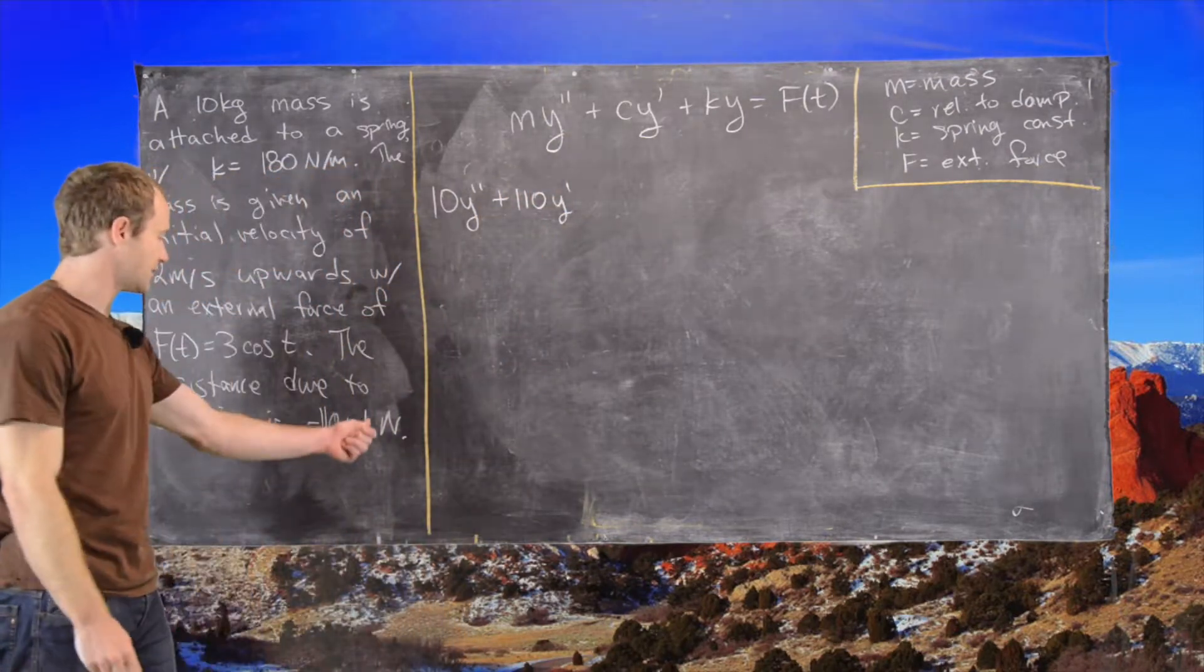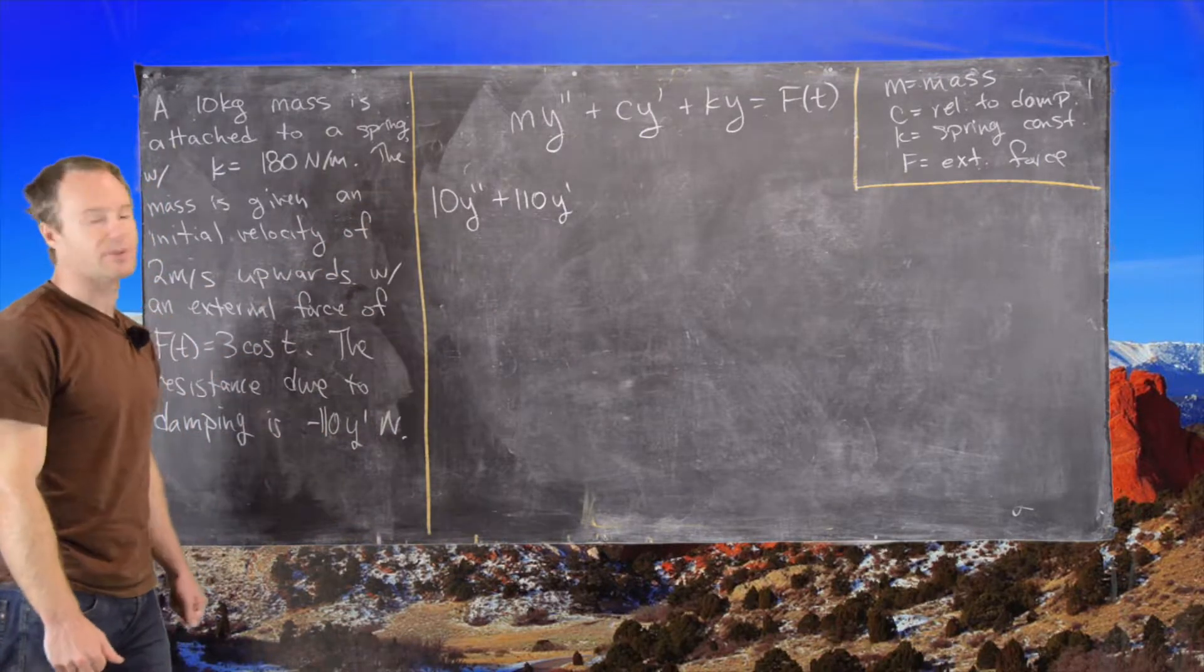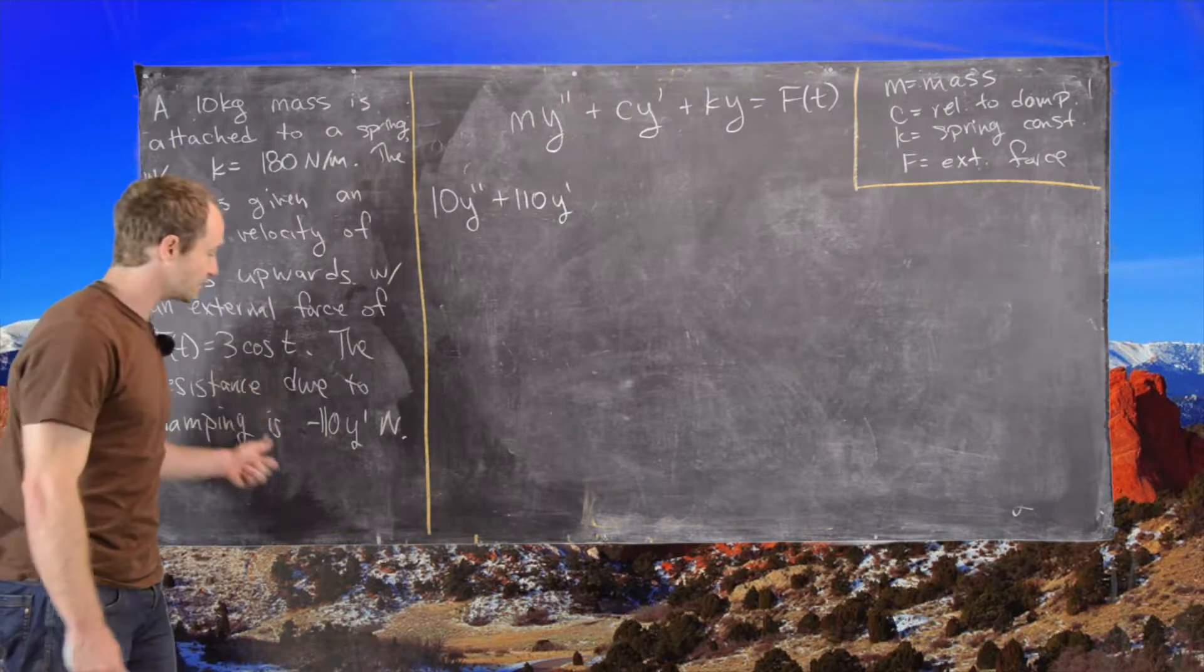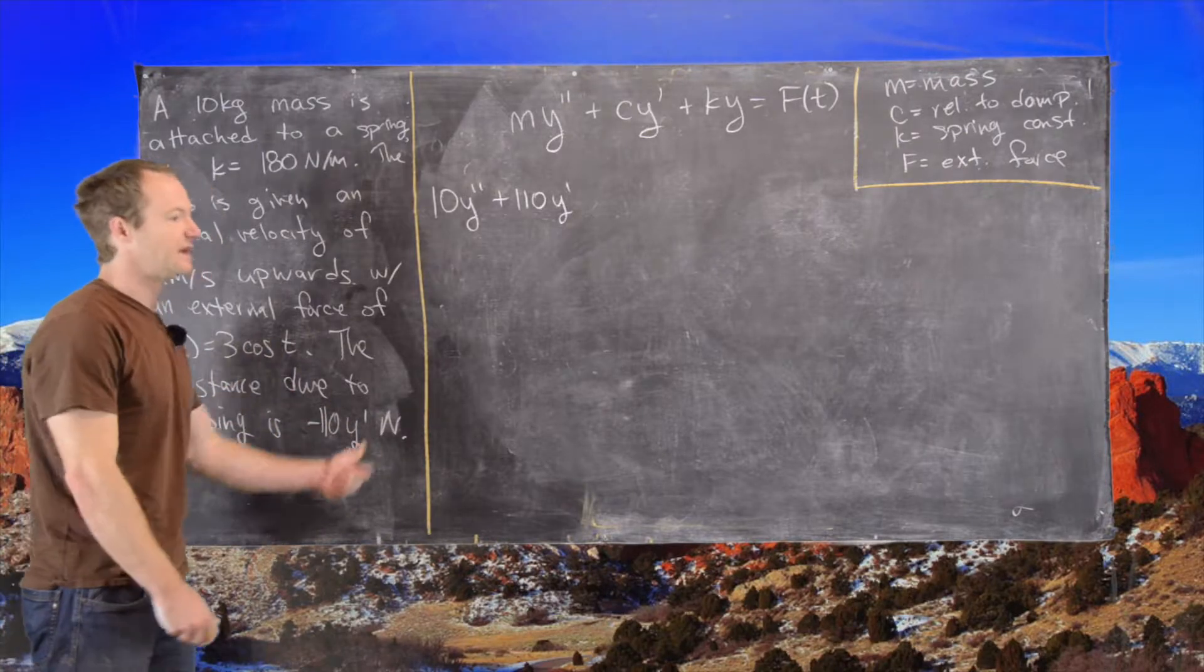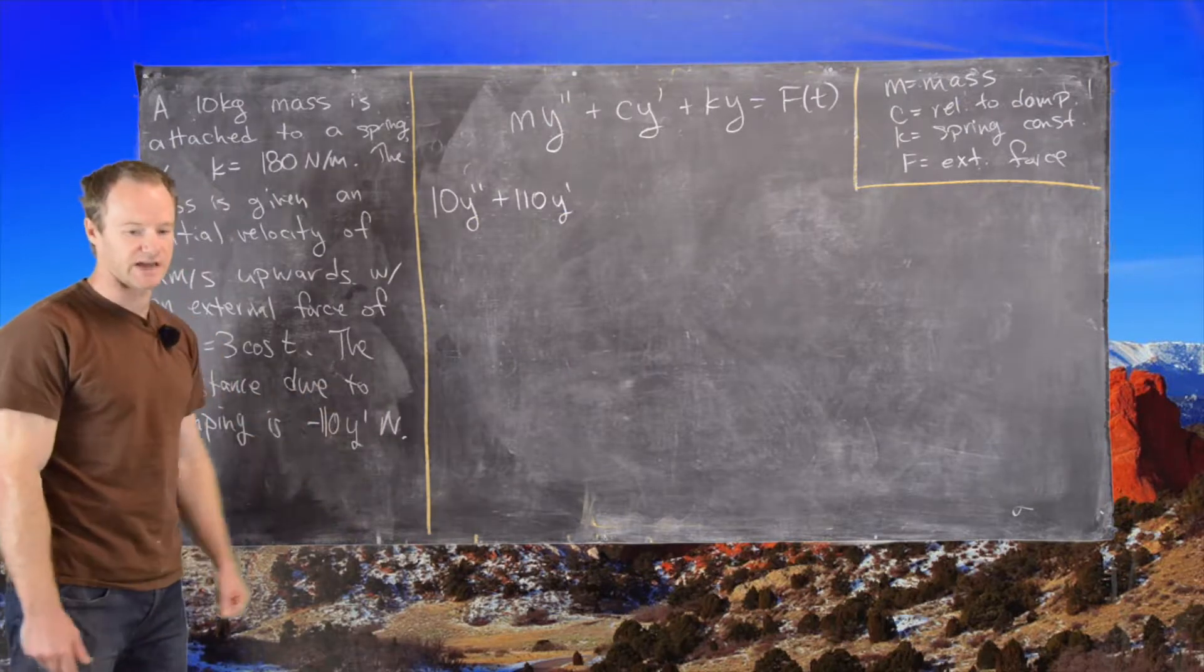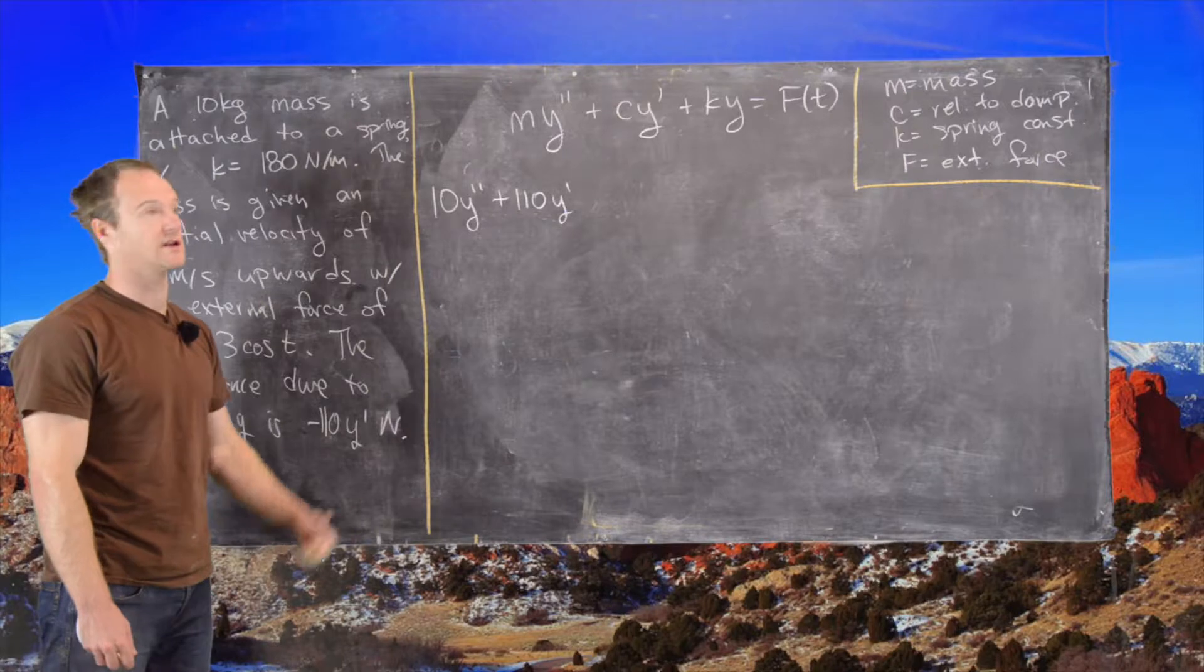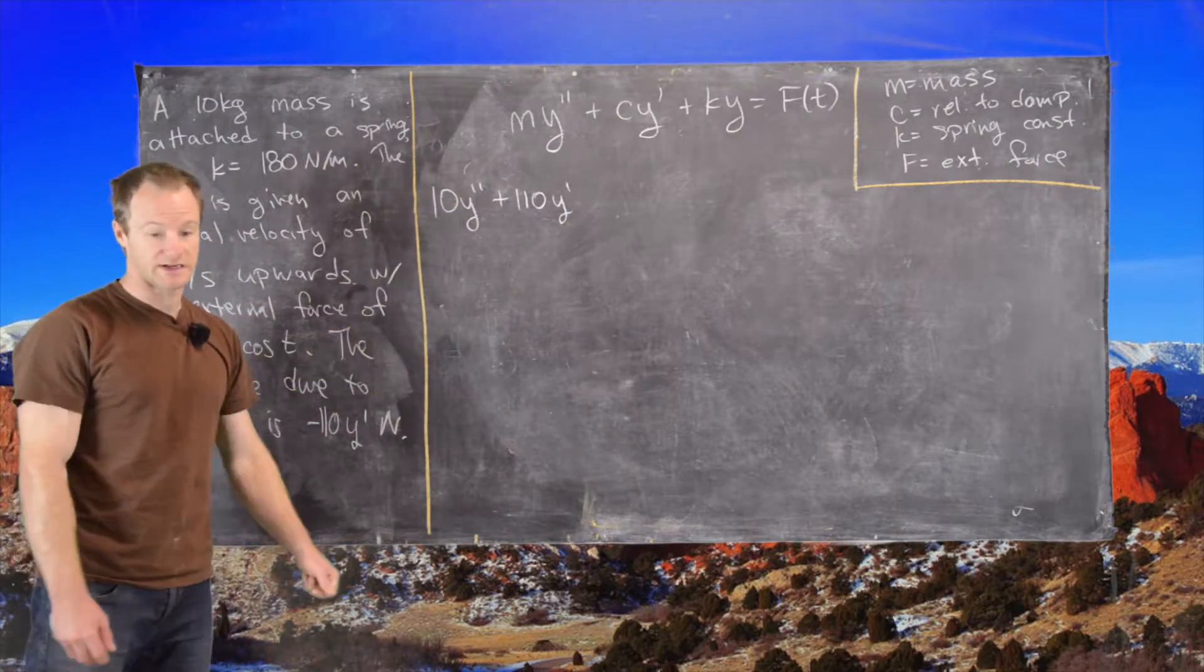Now you might think that we need a negative 110 here, but this negative sign is kind of built into the c. So this is supposed to be resisting, so it's slowing down the spring. Now if it were speeding up the spring then it would be negative 110, but here this is slowing down the spring. But speeding up the spring doesn't really make sense in the real world. That would all happen in the external force.